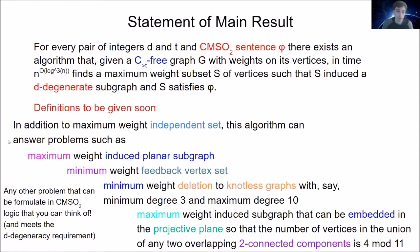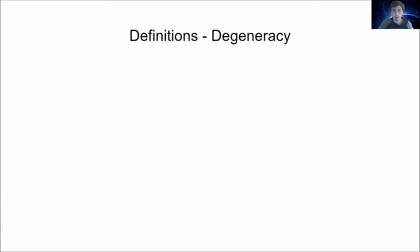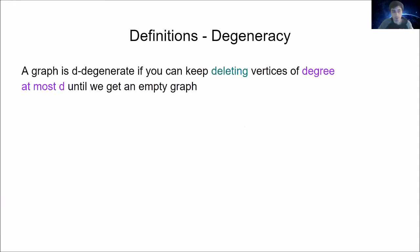Of course, we have to meet the D-degeneracy requirement — our target set of vertices has to induce a D-degenerate subgraph. So let me give you the definition of degeneracy. A graph is D-degenerate if you can keep deleting vertices of degree at most D until you get an empty graph.